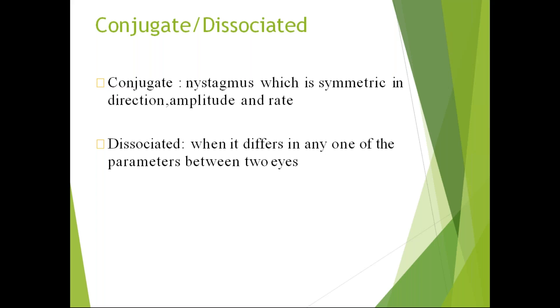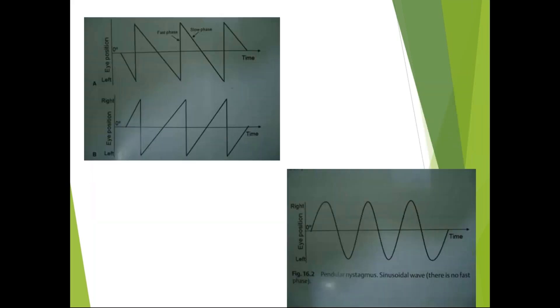Jerk versus pendular: in the diagram, pendular nystagmus shows smooth, equal waves in both directions. In jerk nystagmus, one direction is slow — shown as a slanting line — and the other is fast, shown as a straight vertical line. The slow phase and fast phase can be seen clearly in the waveform depending on the position of the eye.